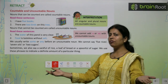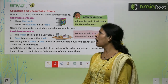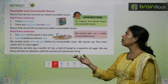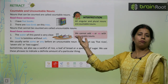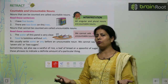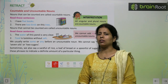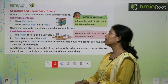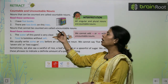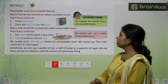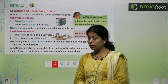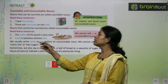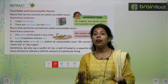Countable and Uncountable Nouns: Nouns that can be counted are called countable nouns. 'I have five books' — you can count books easily, so books are countable. Nouns that cannot be counted are called uncountable nouns. 'The water of this pond is very clear' — you cannot count water, so it is uncountable. 'Food is tasteless without salt' — salt is an uncountable noun.